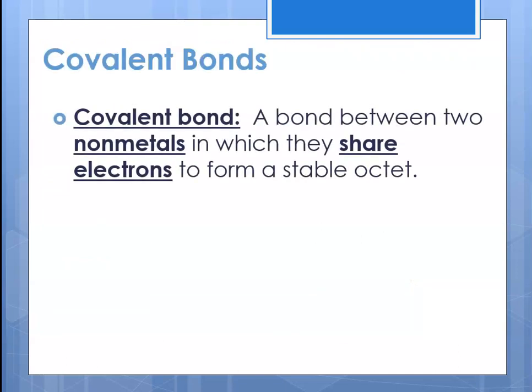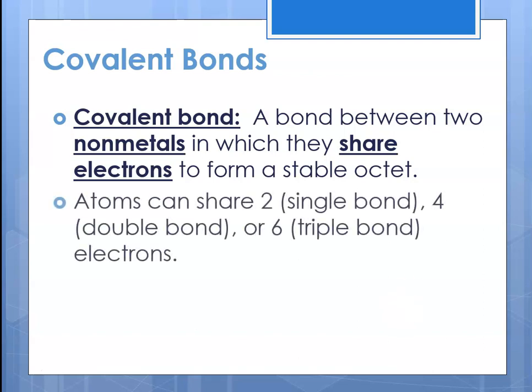With covalent bonds, that's a bond between two nonmetals in which they share electrons to form a stable octet. Atoms can share two electrons, which is a single bond — one from each atom. Four electrons is a double bond, and six electrons would be a triple bond.